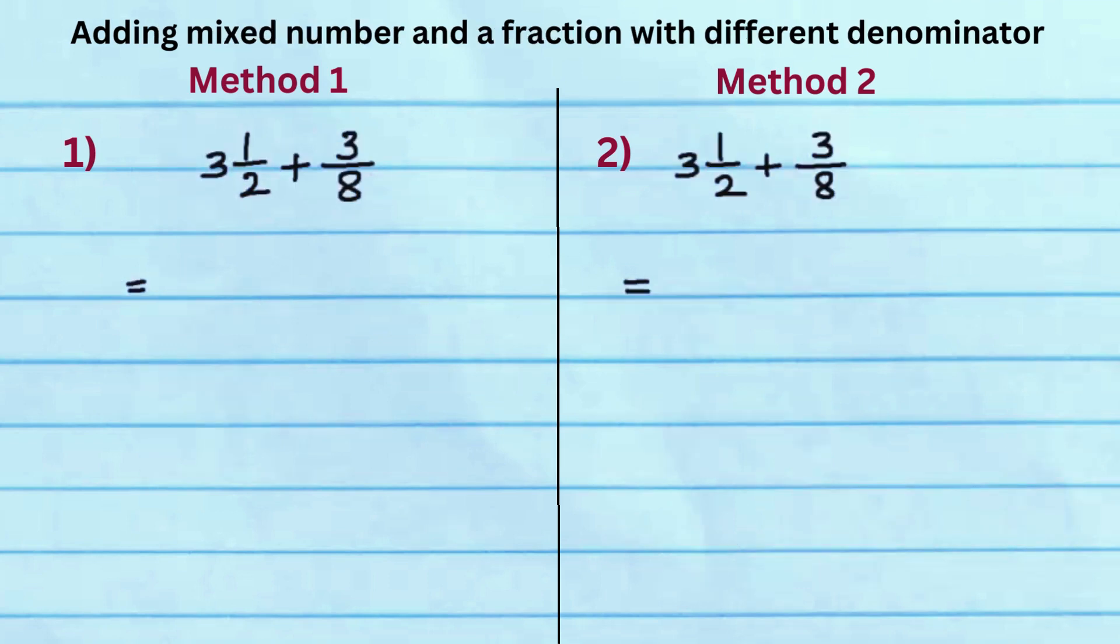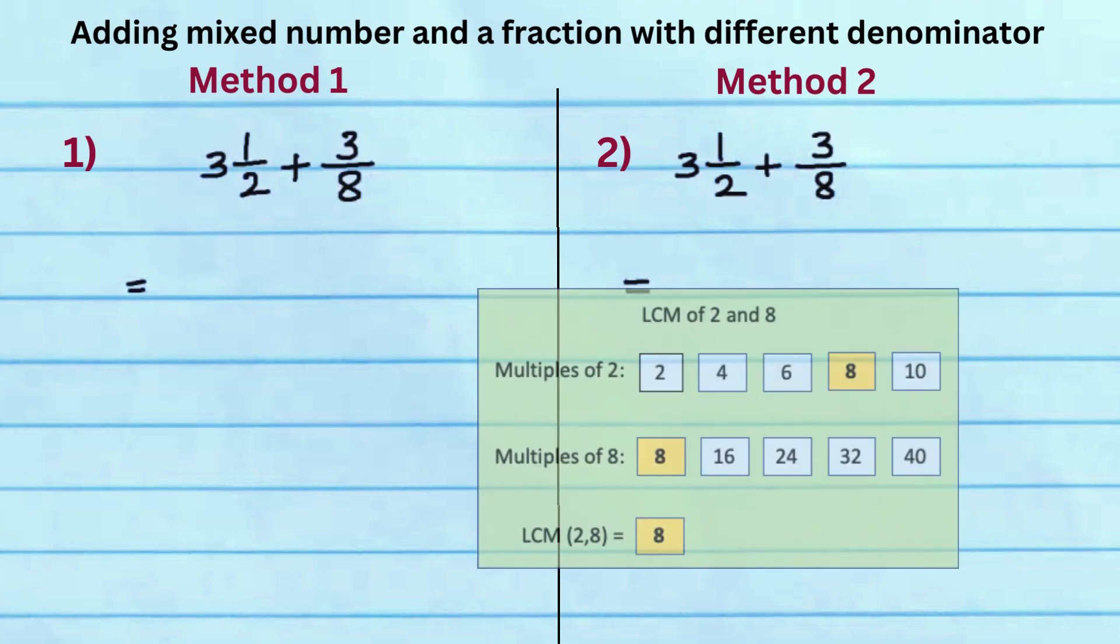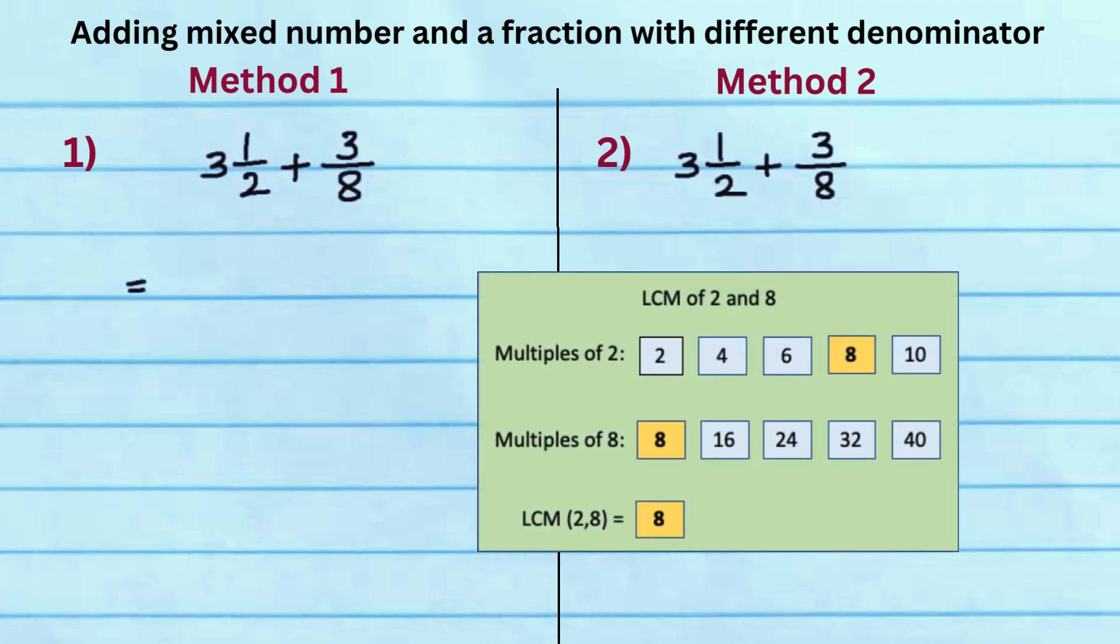In this example, we will see how to add a fraction to a mixed number. Since denominators are different, find the LCM first. LCM of 2 and 8 is 8.